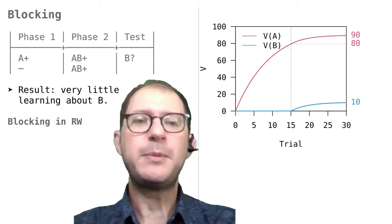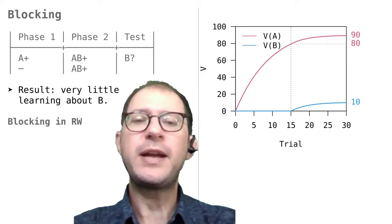The explanation that RW gives for blocking is that in phase 1, A eats up, so to speak, the error, and when B is introduced, there is little or no error left, and so little or no learning.